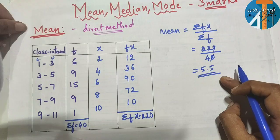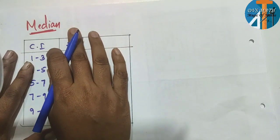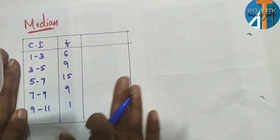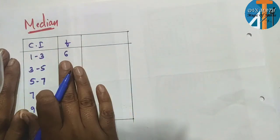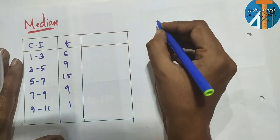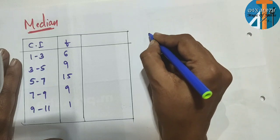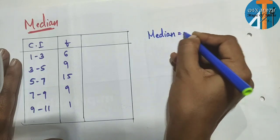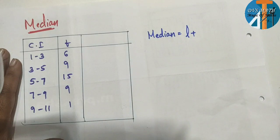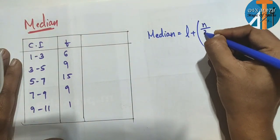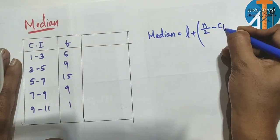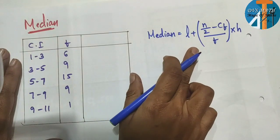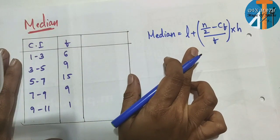This is about finding the mean. You can extend this method. Now for median, using the same class interval. First write the formula. The formula for median is: median = L + (N/2 − Cf) / F × H.